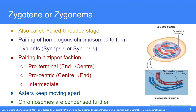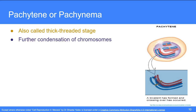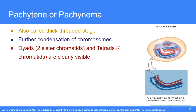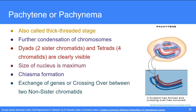After Zygotene, the next stage is Pachytene or Pachynema, also known as the thick-threaded stage due to further condensation of chromosomes. The chromosomes can now be seen as dyads — two sister chromatids attached to one centromere — or as tetrads where four chromatids are aligned together via the synaptonemal complex. The nucleus is at maximum size in this stage. Chiasma formation begins in late Pachytene involving crossing over, the exchange of genes between two non-sister chromatids of homologous chromosomes.